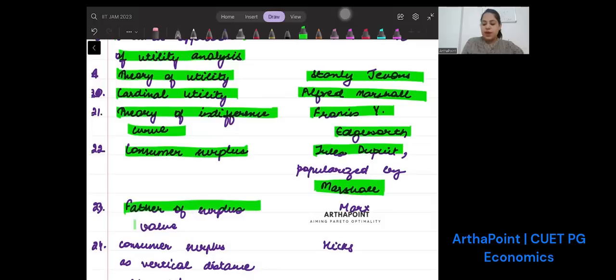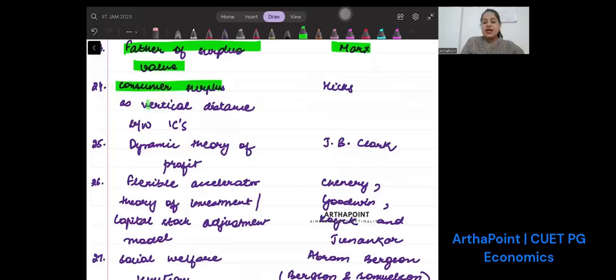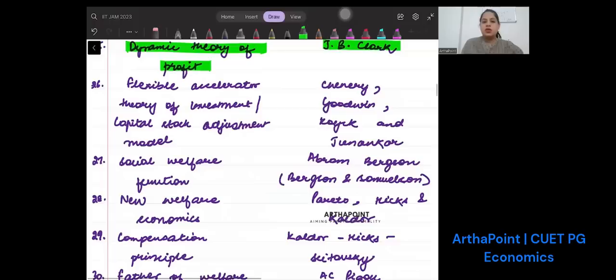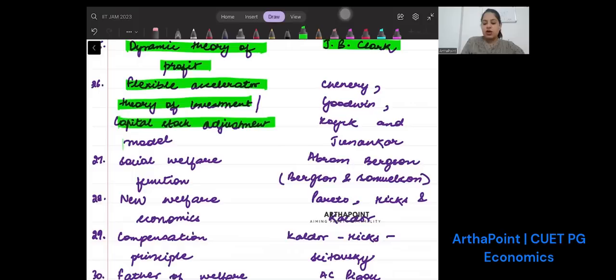Consumer surplus was given by Jules Dupuit, but it was more popularized by Marshall. So in MCQs, you will find Marshall. Father of surplus value was Marx. Consumer surplus as vertical distance between indifference curves was given by Hicks. Dynamic theory of profit was given by J.B. Clark.